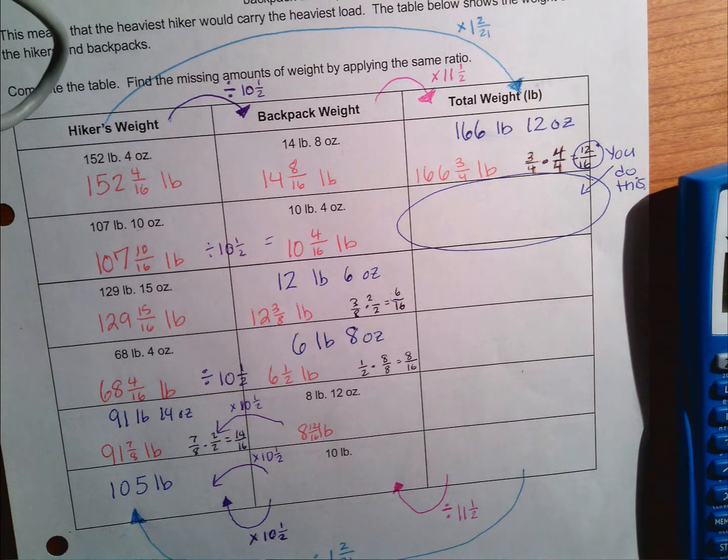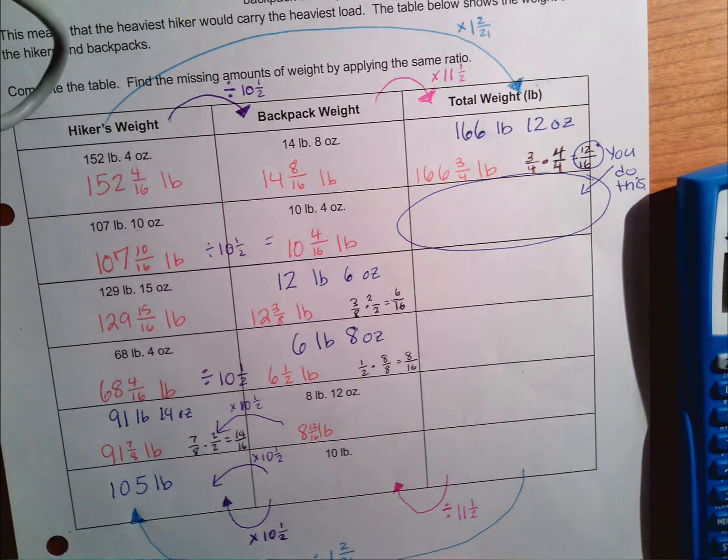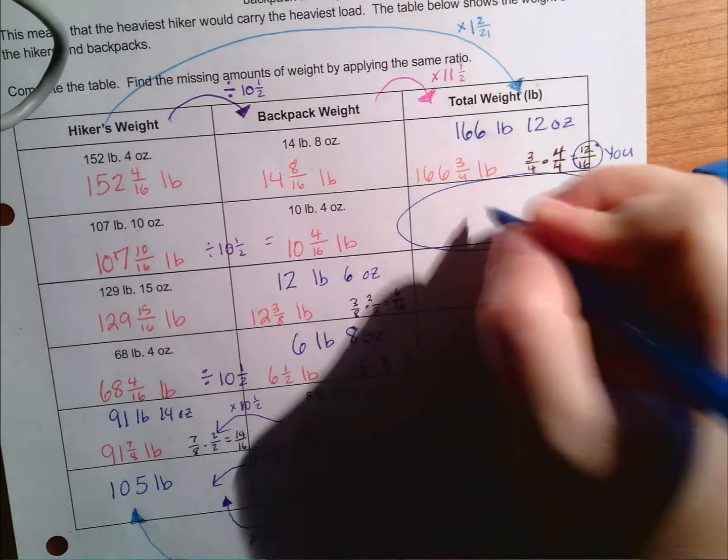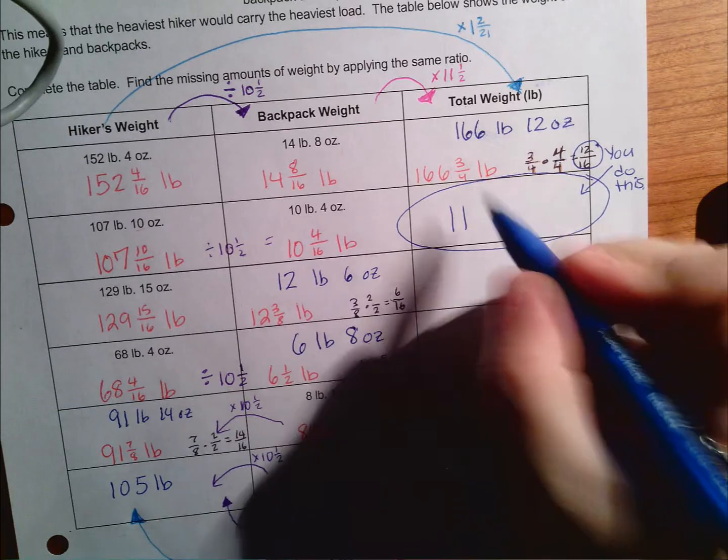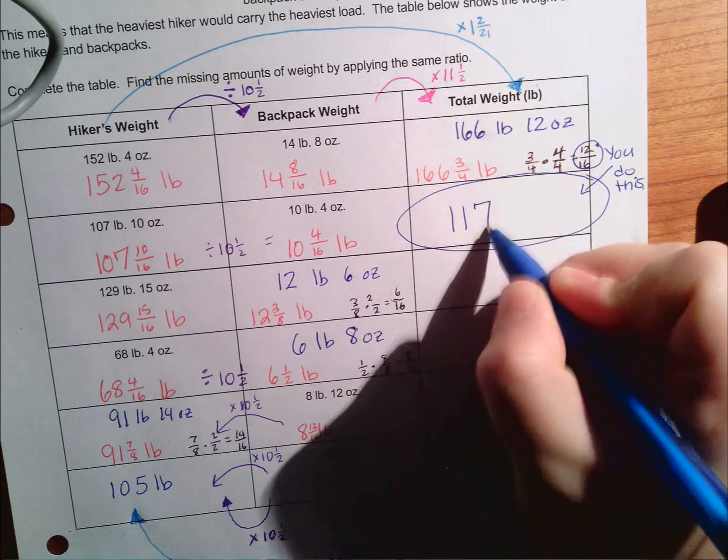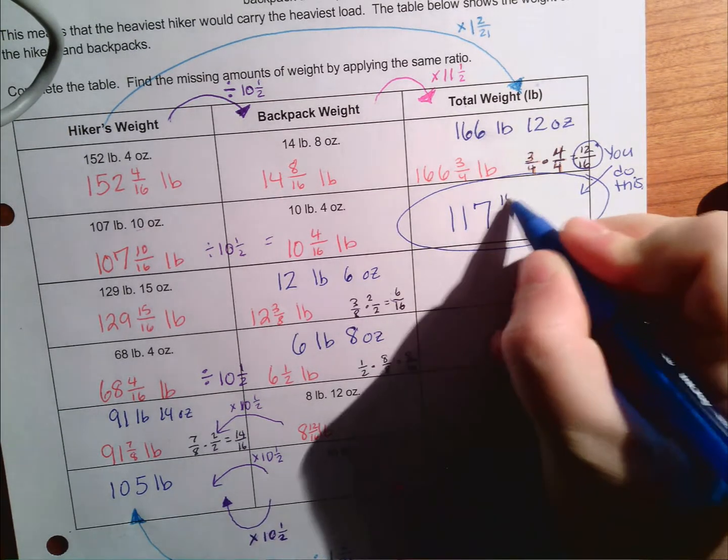I'm only doing this now so you can check your answers. I'm not going to walk through those steps. My first answer for the hiker that weighs 107 pounds and 10 ounces is 117 pounds and seven eighths of another pound, or fourteen sixteenths of a pound - 117 pounds, 14 ounces.